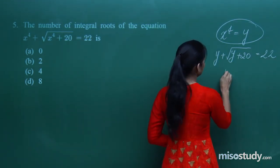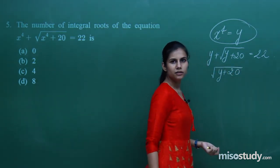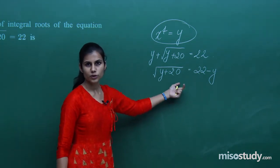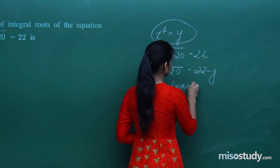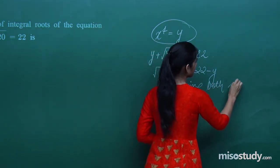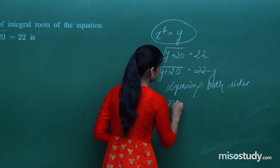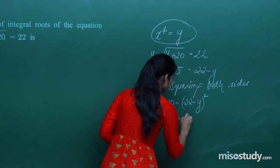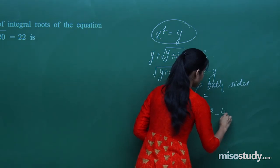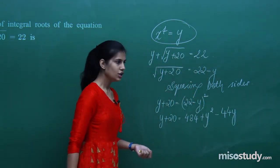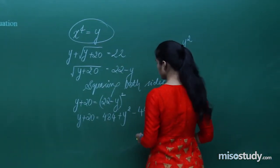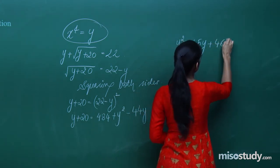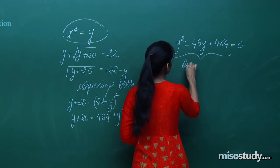Isolating the square root and squaring both sides to eliminate it: y + 20 = (22 - y)², which expands to y + 20 = 484 + y² - 44y. Rearranging gives y² - 45y + 464 = 0, a quadratic in y.